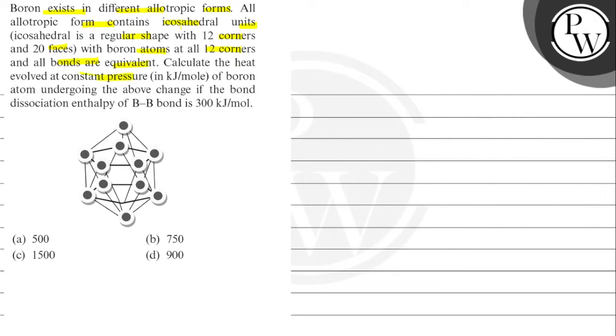Calculate the heat involved at constant pressure in boron undergoing the above change if the bond dissociation enthalpy of B-B bond is 300 kJ per mole.